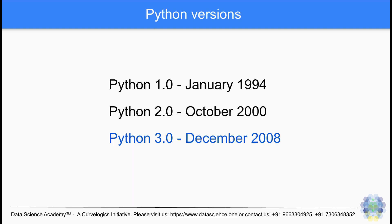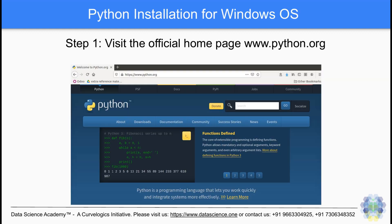Python has undergone three major versions. Python 1 was released in January 1994. Python 2 was released in October 2000, and the current stable release, Python 3, was released in December 2008. This video tutorial series will focus on Python 3 only.